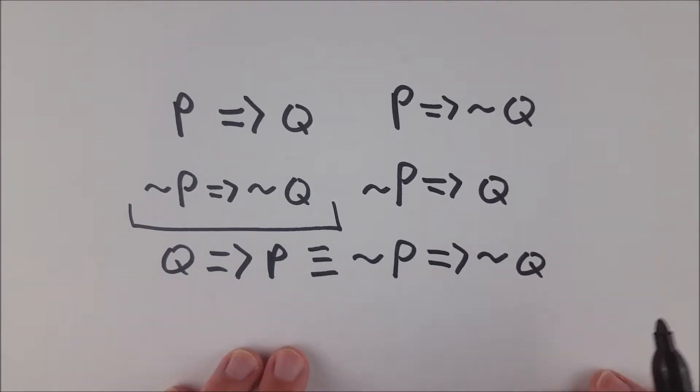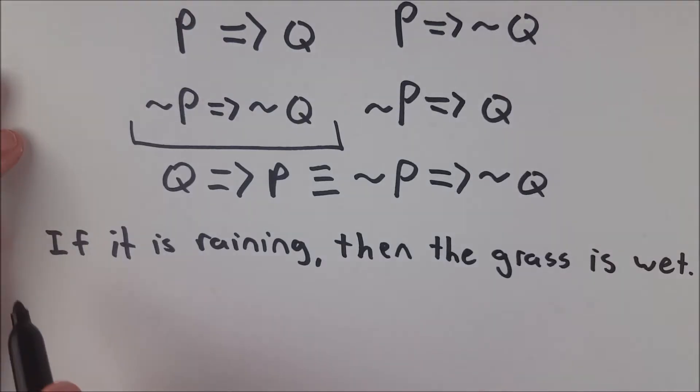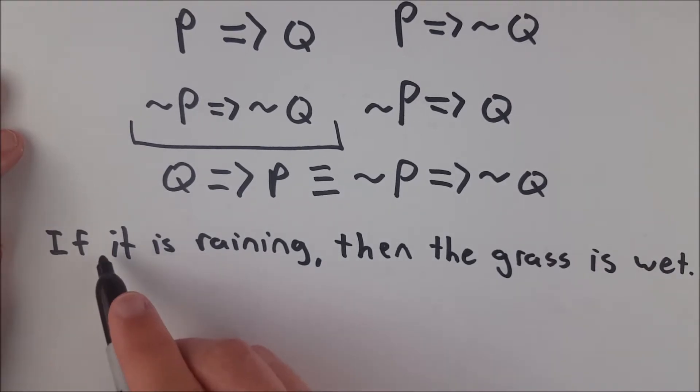So now I'll just write out an example for you and we will call it a day. All right, so here we have a tried and true example for talking about logic. If it is raining, then the grass is wet. It is raining is our P and the grass is wet is our Q.